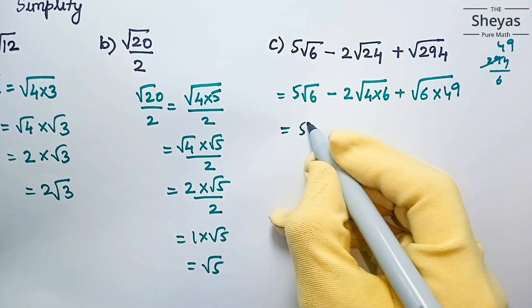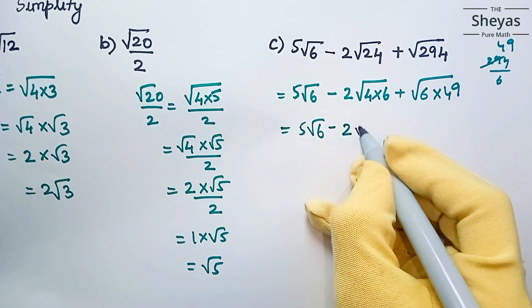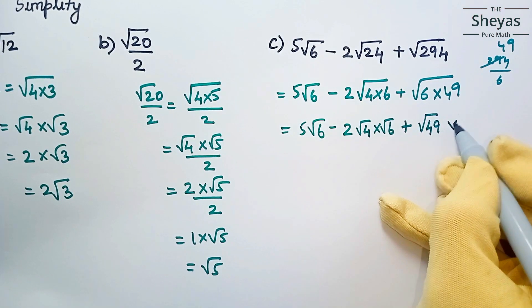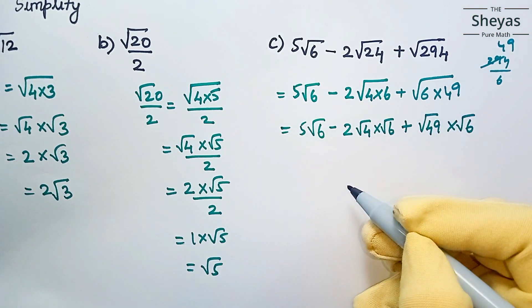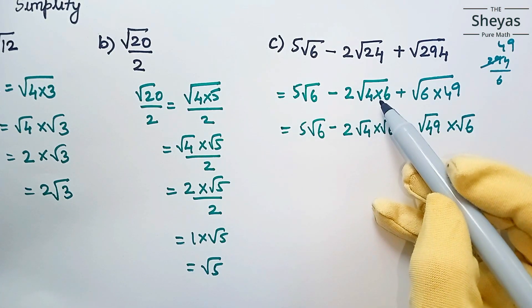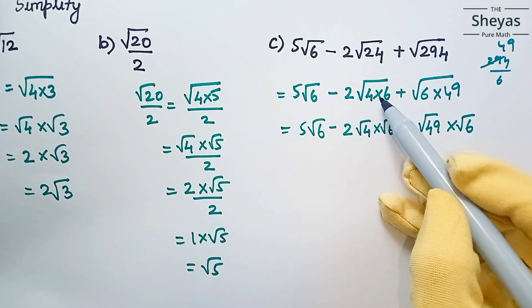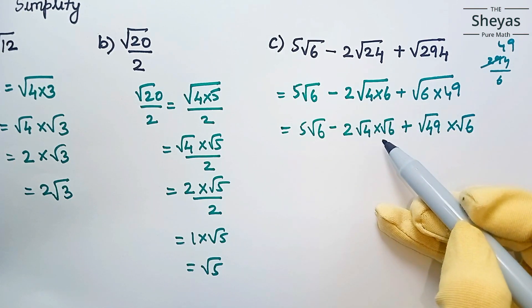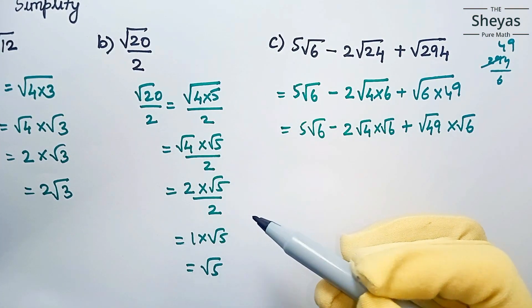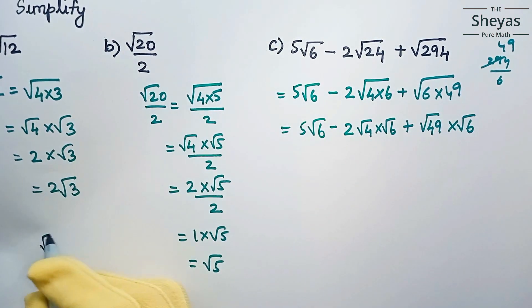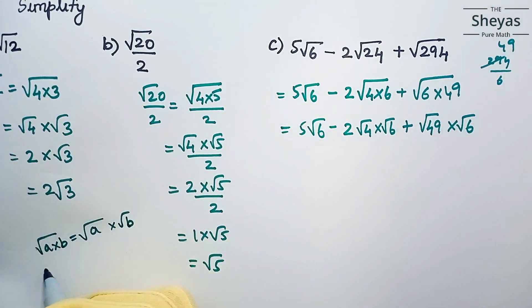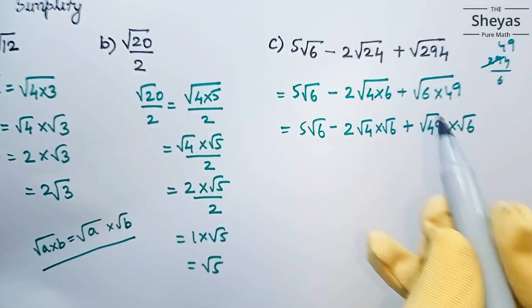What is the next step? 5 root 6 minus 2 root 4 times root 6, plus root 49 times root 6. Here I am applying the rule of surds, that is root A times B equals root A times root B. I am applying this same rule in all the problems.